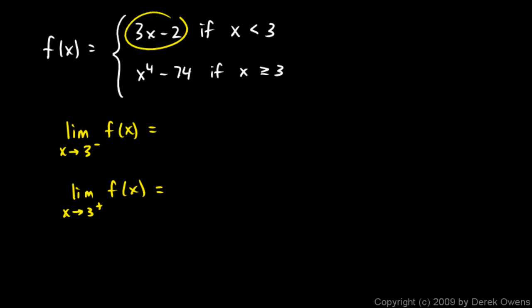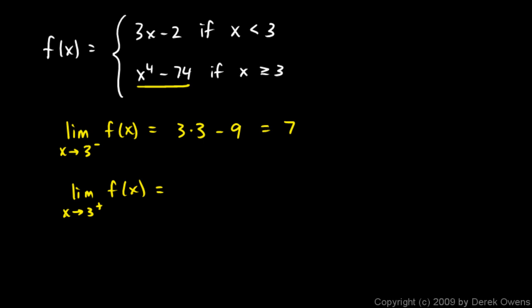For the left limit, 3x - 2 as x approaches 3 gives us 3(3) - 2 = 7. For the right limit, x⁴ - 74 at x = 3: 3 to the 4th is the same as 9 times 9, which is 81, and 81 - 74 = 7.